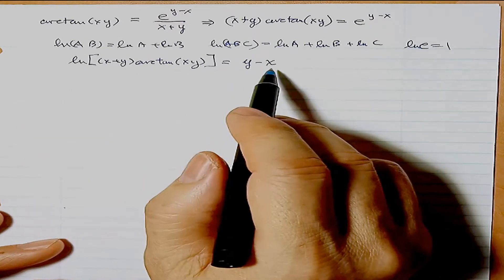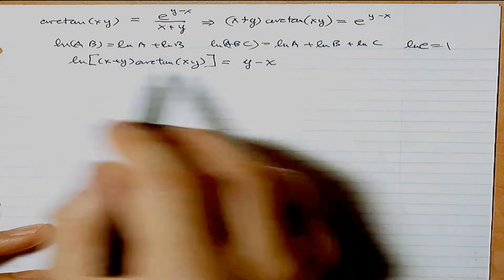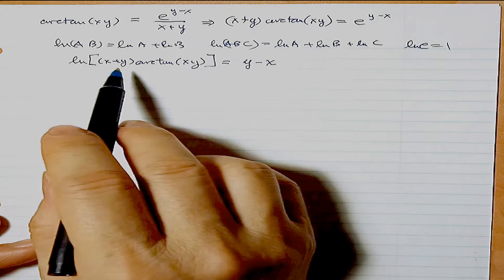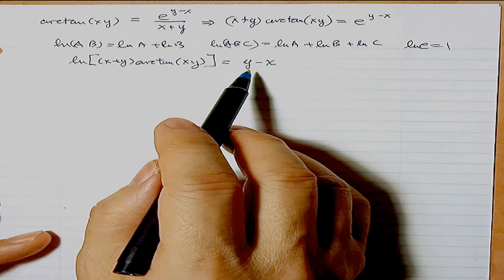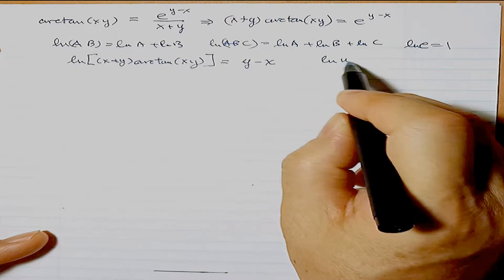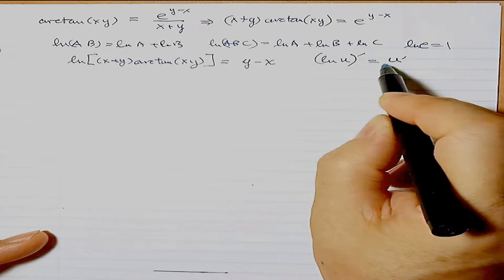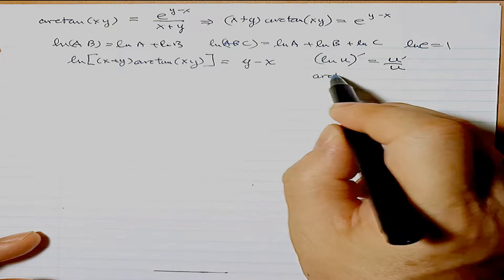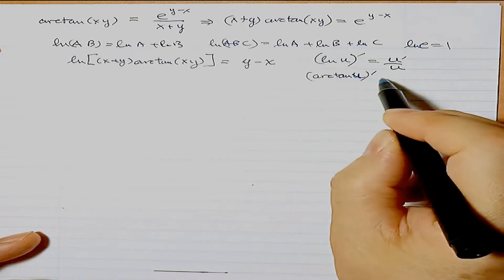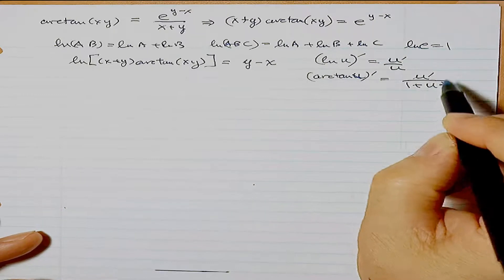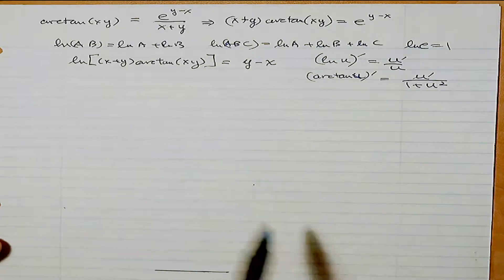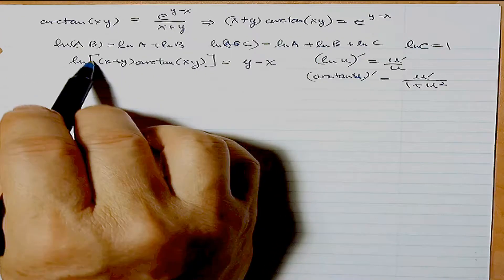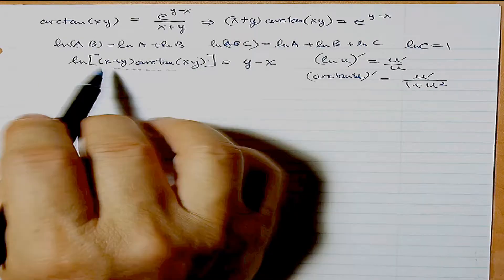This is now the same equation as the original, just rearranged a little. Now I take the derivative of all this, which should be simpler. Remember: the derivative of log(u) is u'/u, and the derivative of arctan(u) is u'/(1 + u²). You need to remember these two formulas to do this question.